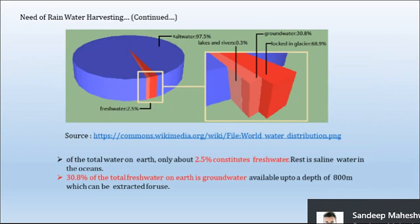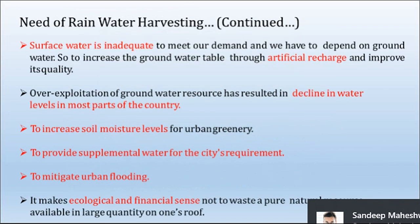The total amount of water on earth has only a fraction of 2.5% as freshwater. Out of this 2.5%, 30.8% of the total freshwater is available in the form of groundwater, up to a depth of 800 meters which can be extracted for use. Surface water is inadequate to meet our demand and we have to depend on groundwater. To increase the groundwater table through artificial recharge and improve its quality, we need rainwater harvesting. Over-exploitation of groundwater has resulted in declining water levels in most parts of countries. To increase soil moisture levels for urban greenery, we need to go for rainwater harvesting.